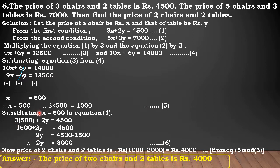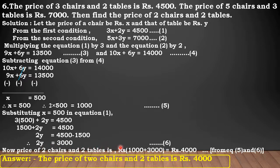Substituting X equals 500 in equation 1, we get 3 into 500 plus 2Y is equal to 4,500. Simplifying, 1,500 plus 2Y is equal to 4,500. Therefore, 2Y is equal to 4,500 minus 1,500, so 2Y is equal to 3,000. Number this equation as 6. Now, the price of 2 chairs and 2 tables together is equal to Rs. 1,000 plus Rs. 3,000, that is Rs. 4,000, from equations 5 and 6. Answer: the price of 2 chairs and 2 tables is Rs. 4,000.